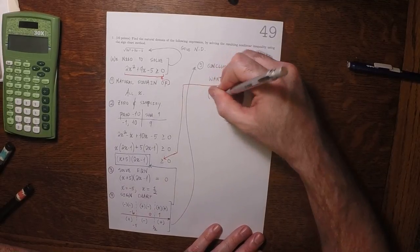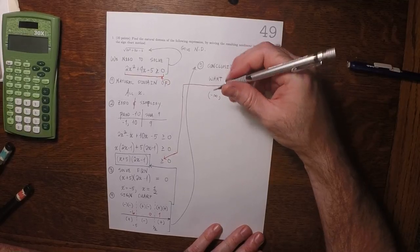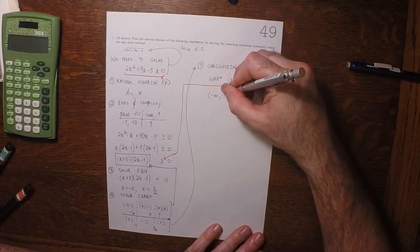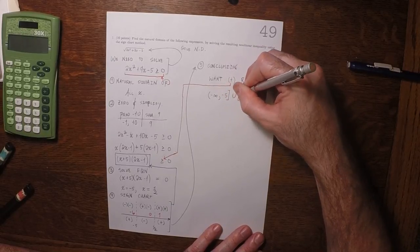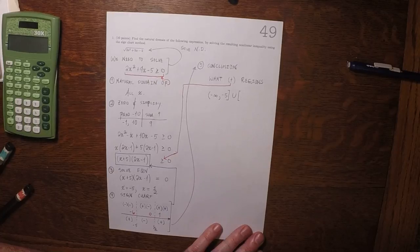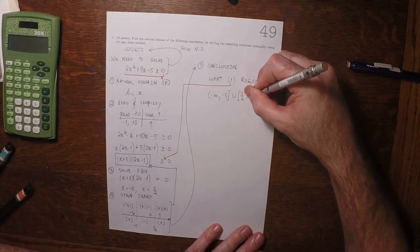So that'd be negative infinity to negative 5, including negative 5, and then union, half to infinity.